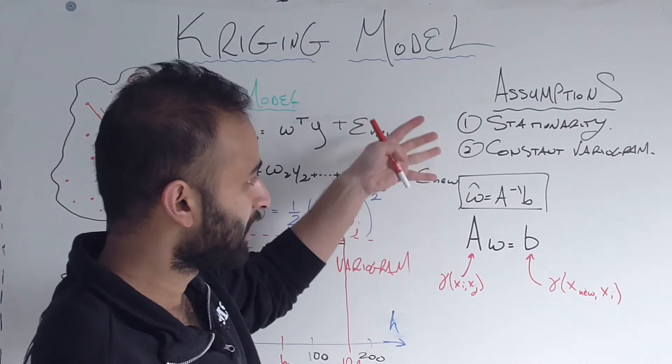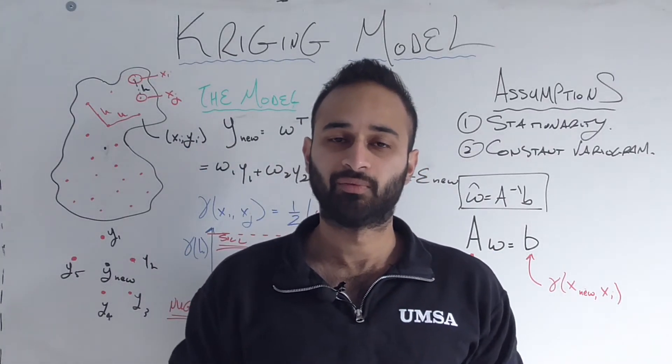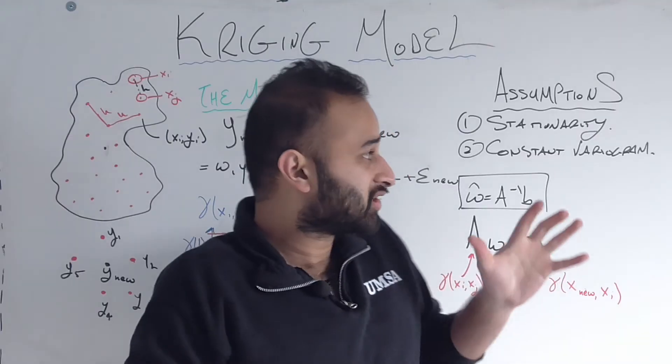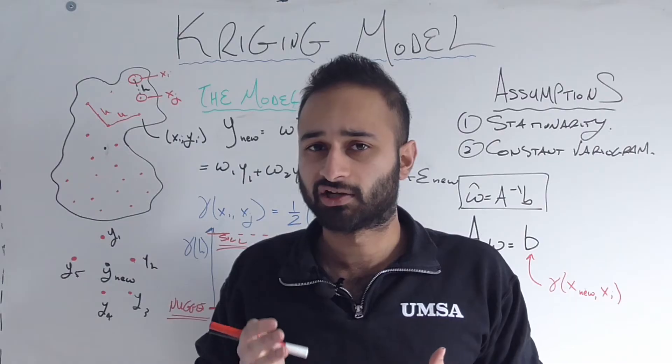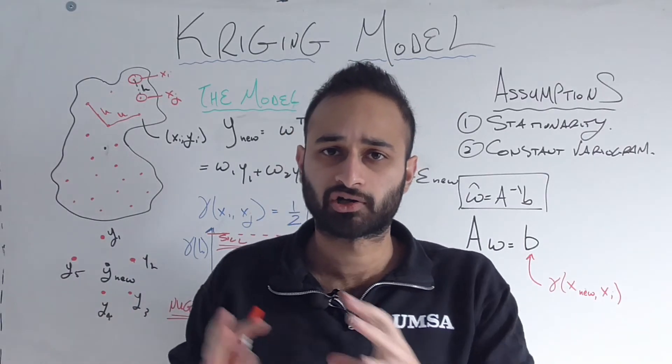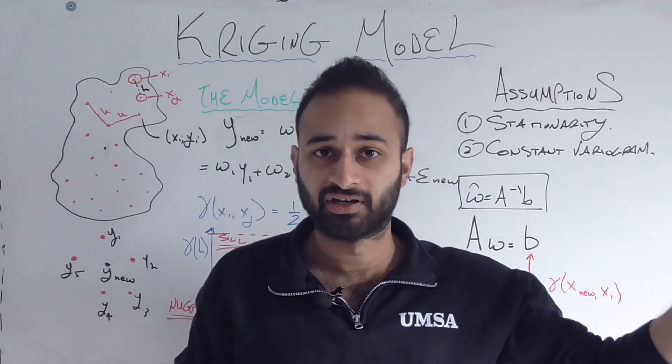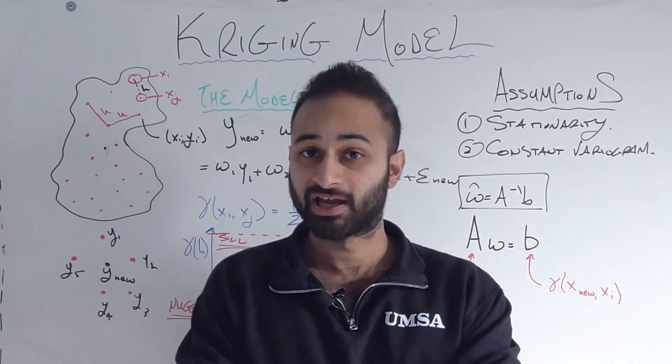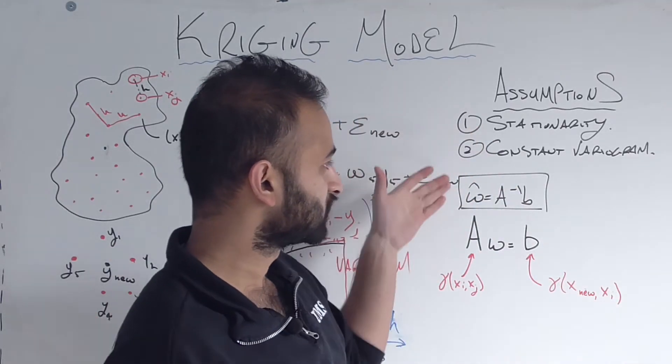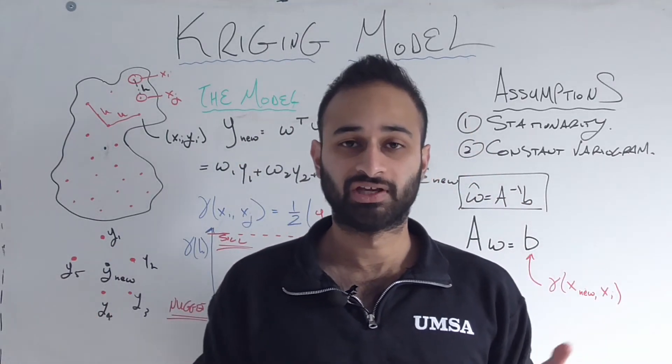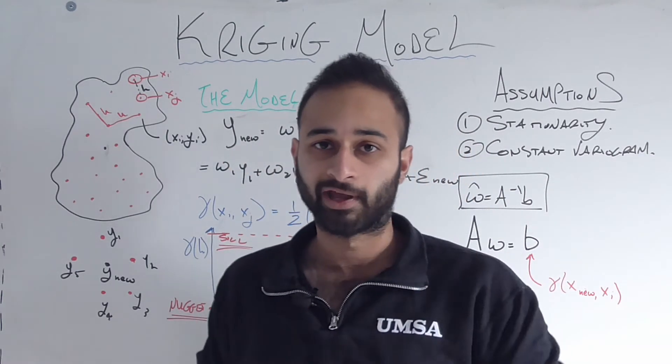If these assumptions are met, if it's stationary and if it has a constant variogram, then we're safe to use the Kriging model. Then we can use it. Even if these assumptions are not met, we can always do some kind of transformations to try and get our data to be more stationary or have a more constant variogram. Some basic ones would be like taking the log of the data or taking the square root of the data. There's more complicated stuff you can do in stats to coerce data to these conditions. But whatever you had to do to get it to those conditions, once it's there, you're safe to use this really cool thing called the Kriging model.